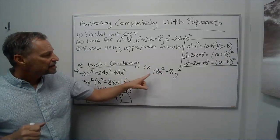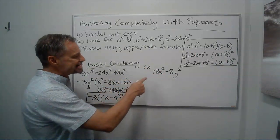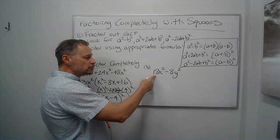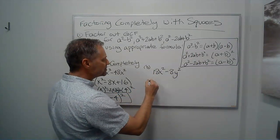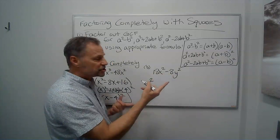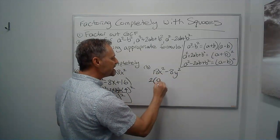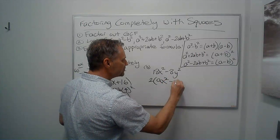All right. Next problem. Look for greatest common factor. Let's see. 2 goes into both of those. Let's see. 2 is going to leave me at 9, so then nothing else goes in there. And nothing else goes in. Just 2 goes into both of those. It's going to leave me at 9x squared minus 4y squared.